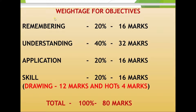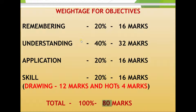You should also know the weightage for objectives. Remembering is for 16 marks, understanding for 32 marks, and application questions — where you apply your knowledge to a new situation based on concepts from the core textbook — are for 16 marks. Skill-based questions, which include diagram drawing, are 12 marks, and diagram-based questions are 4 marks, totaling 16 marks for skills. Overall total: 80 marks.